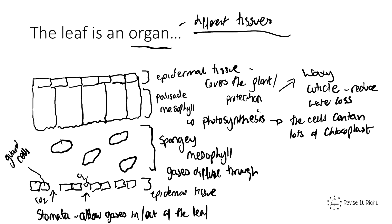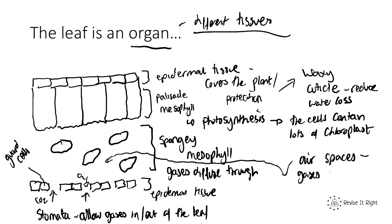The spongy mesophyll allows gases to diffuse through. You'll notice it has lots of air spaces between the cells — it's adapted by having lots of air spaces, which means gases can diffuse through. Carbon dioxide comes in and goes into the palisade mesophyll for photosynthesis, and oxygen produced is able to diffuse out through the stomata.